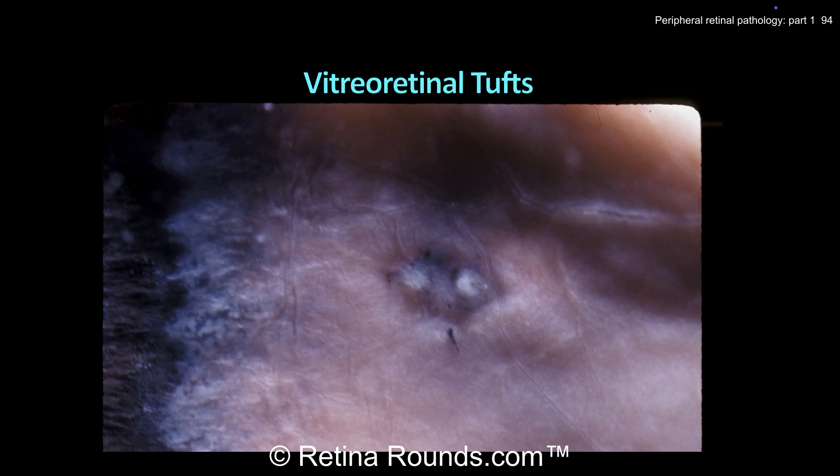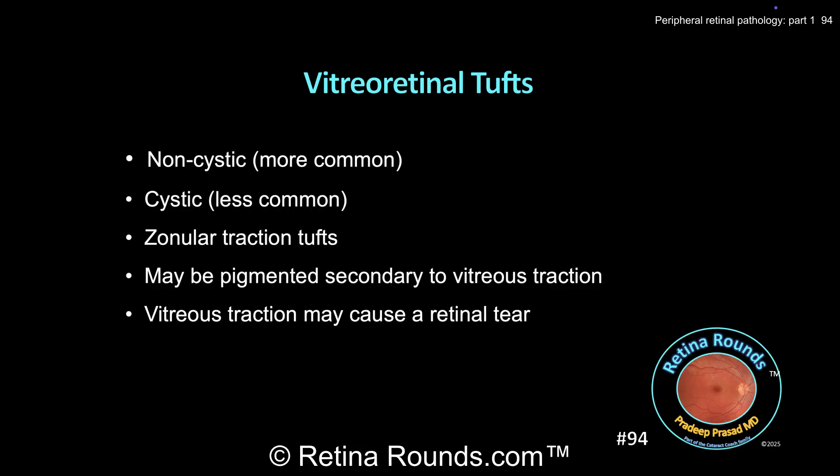Next, we'll discuss vitreo-retinal tufts. In this photo you can see two discrete tufts or excrescences of the retina, which have a gliotic appearance and a hyperpigmented rim. Retinal tufts can be characterized as non-cystic (the more common variety), cystic (less common, with cavitations within the tuft), and zonular traction tufts, which appear as thin strands of tissue that can extend anteriorly from the ciliary body to the retinal surface. Vitreo-retinal adhesions are tight with vitreo-retinal tufts, and traction exerted by the vitreous may result in hyperpigmented lesions or hyperpigmented borders.